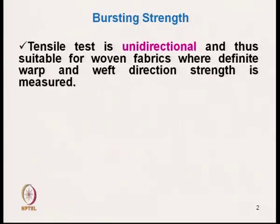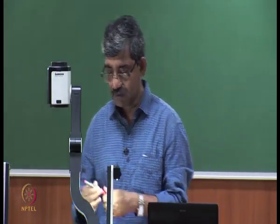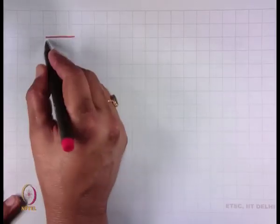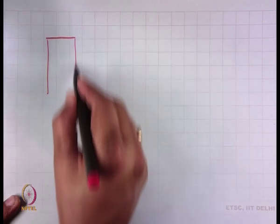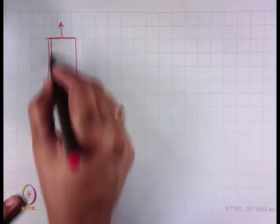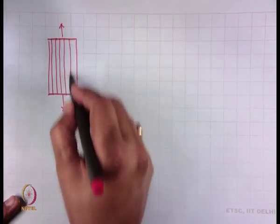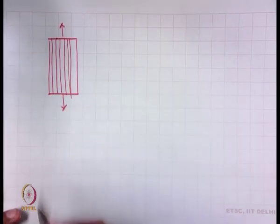When we talk about tensile testing as we have seen earlier, tensile testing deals with unidirectional characteristics. Thus, it is suitable for fabrics like woven fabric where definite warp and weft direction is there. In tensile testing, as we have seen in strip testing or grab testing, we take strength in one direction — either warp direction or weft direction.